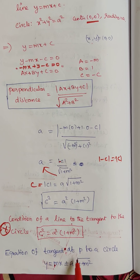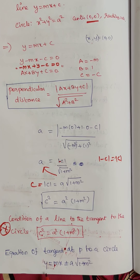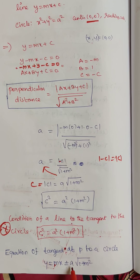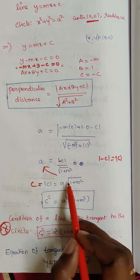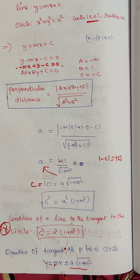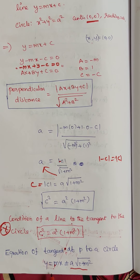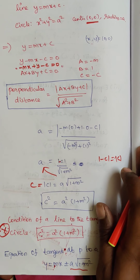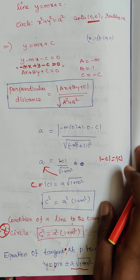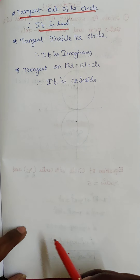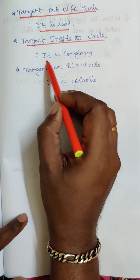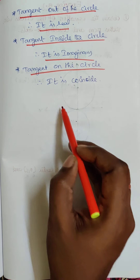The equation of tangent at a point on the circle is y equals mx plus or minus a times square root of 1 plus m squared, where c equals a times square root of 1 plus m squared. If the tangent is outside the circle, it is real. If inside the circle, it is imaginary. If on the circle, it is coincident.